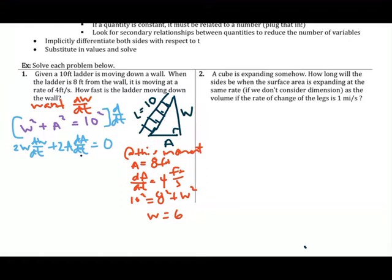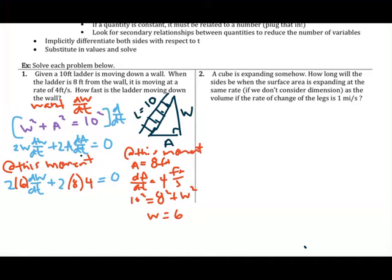Now we fill in all the known information at this instant into the equation. We know W equals 6, A equals 8, and dA/dt equals 4. Substituting everything in, we isolate dW/dt, which is the goal of this problem.